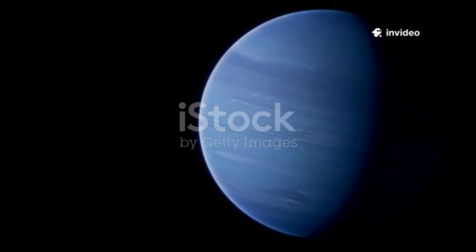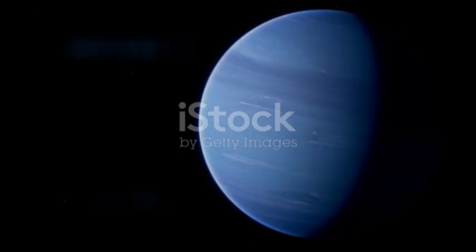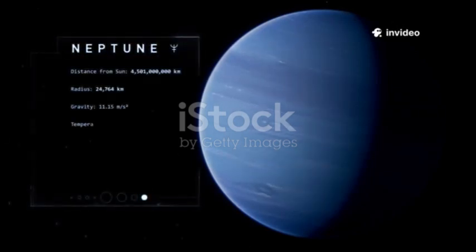Neptune, a shimmering blue giant, wasn't initially spotted through the lens of a telescope. Its existence was hinted at not by direct observation, but by something far more profound. It was found with math, a testament to the power of theoretical physics.